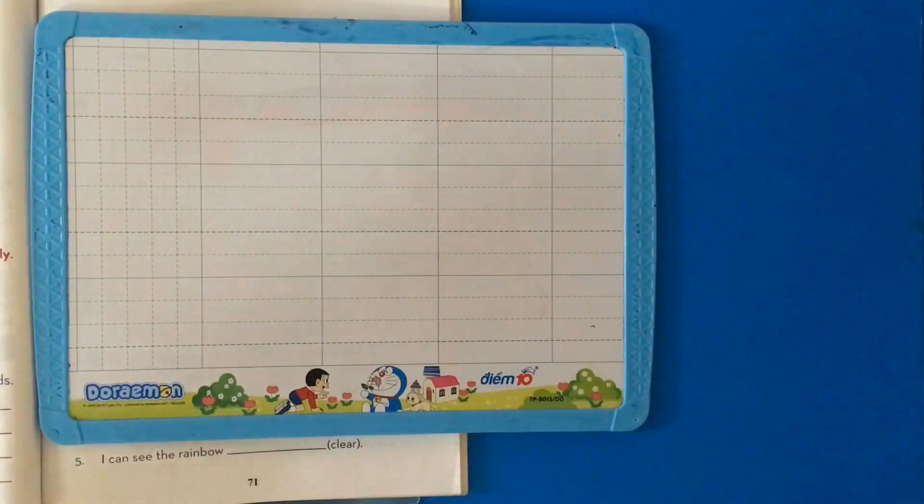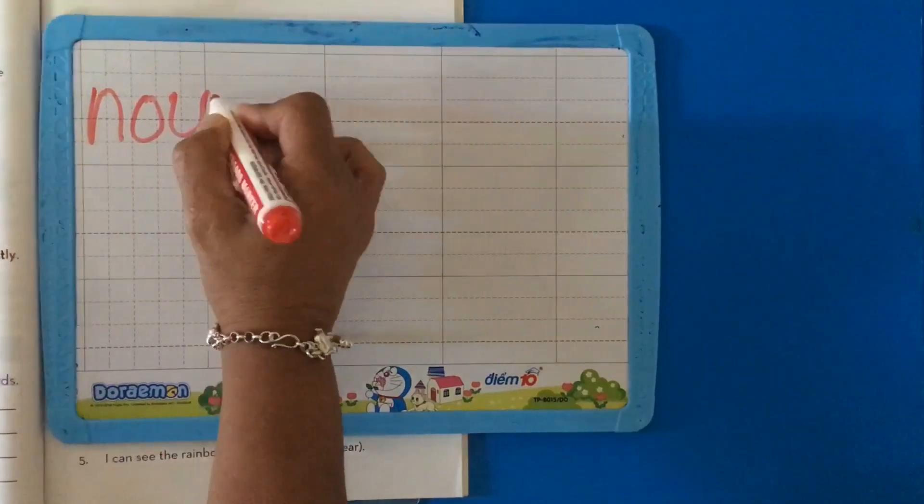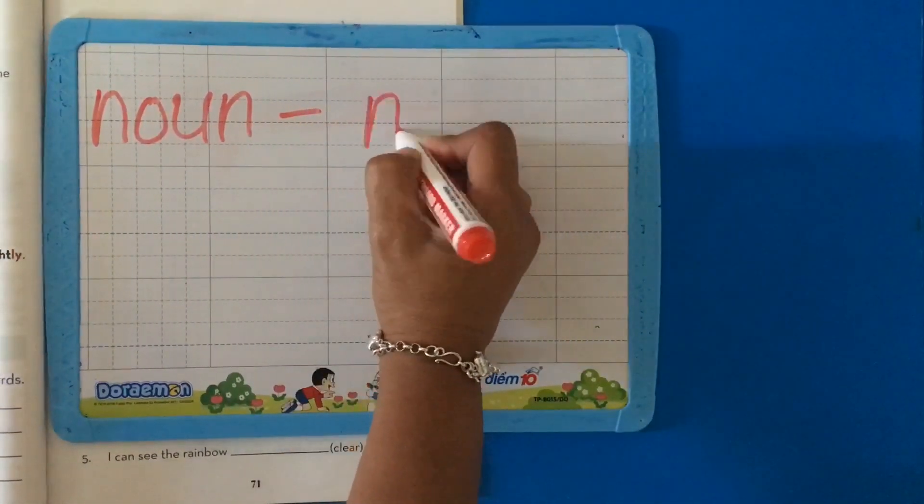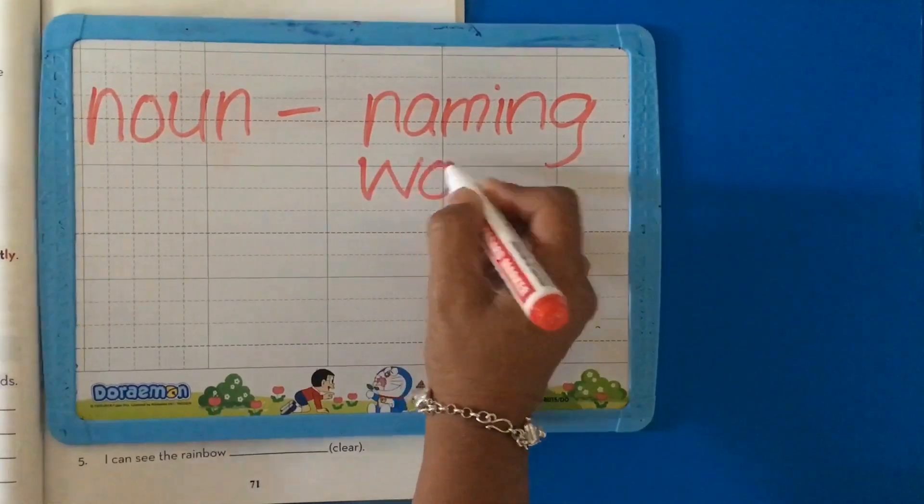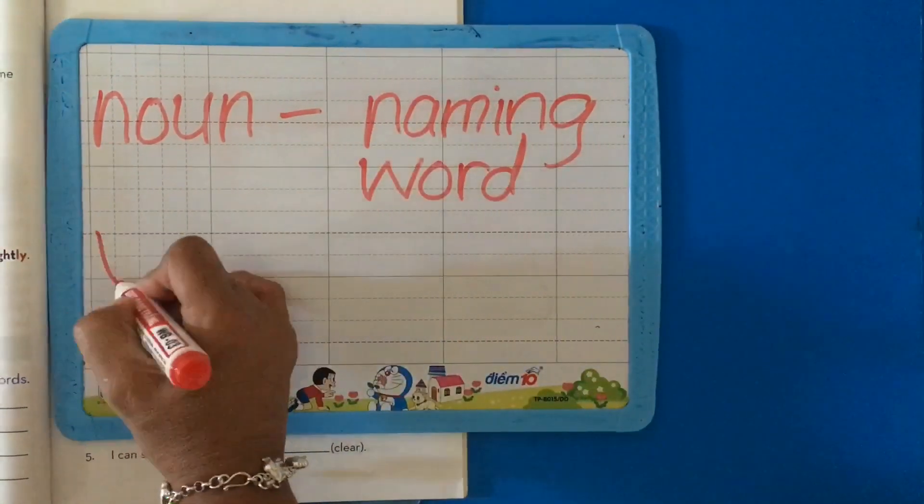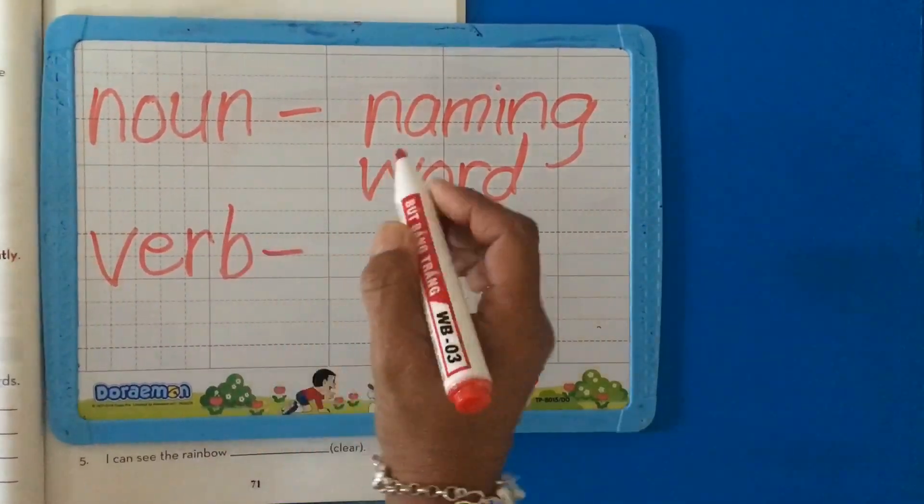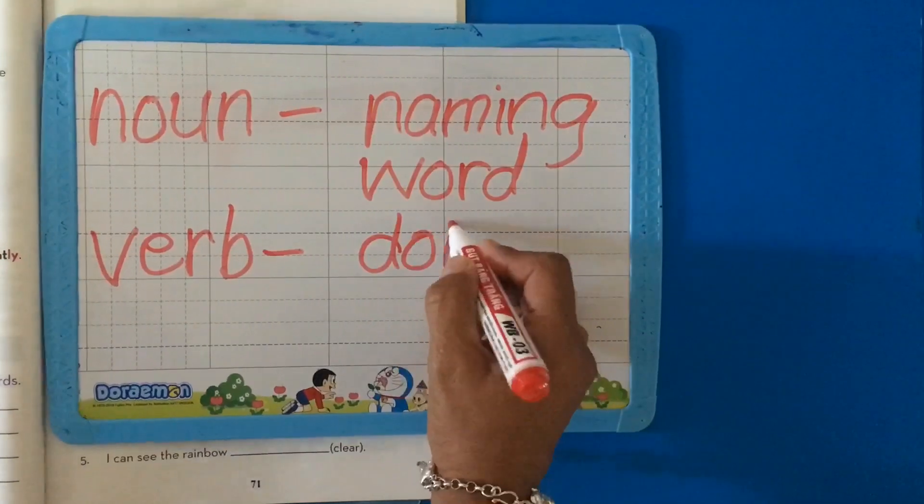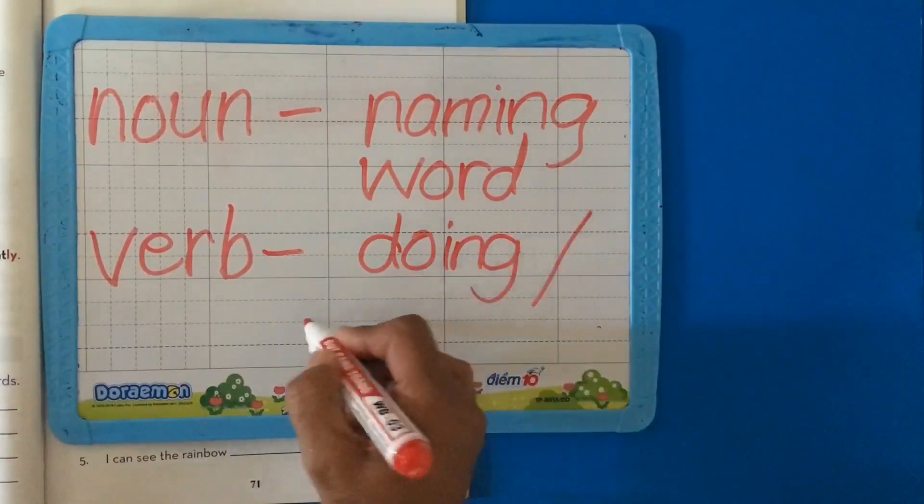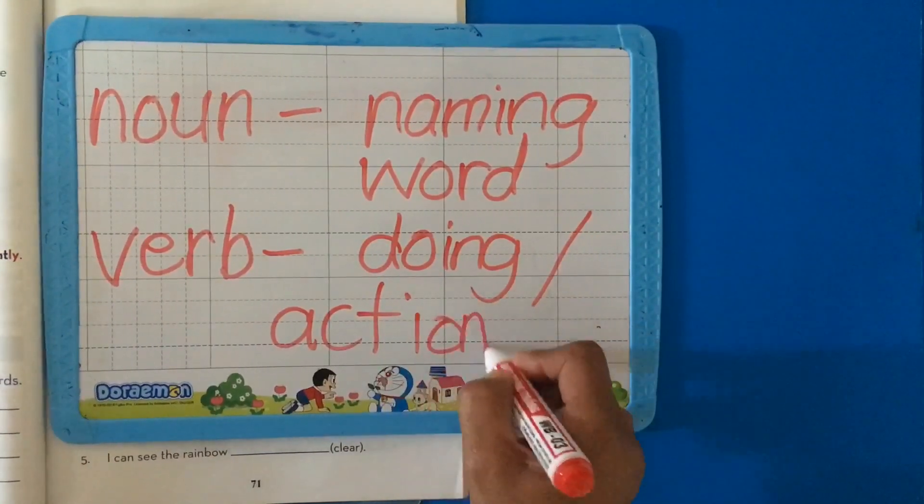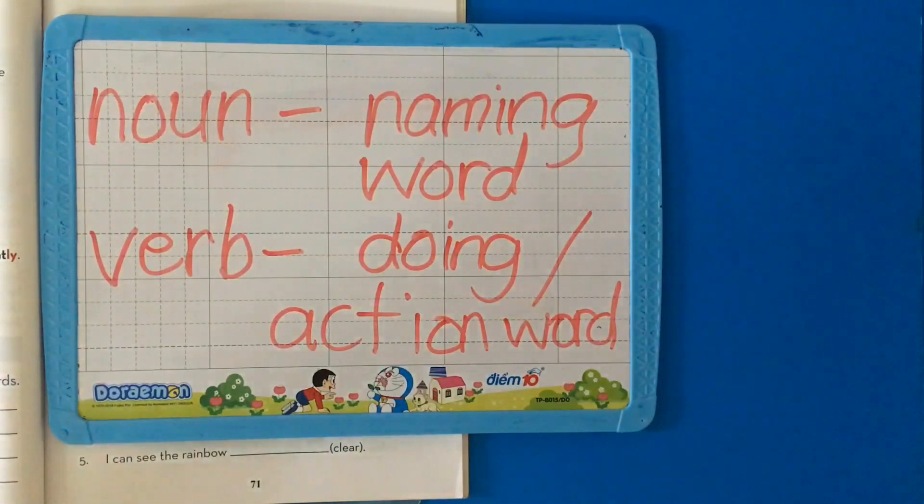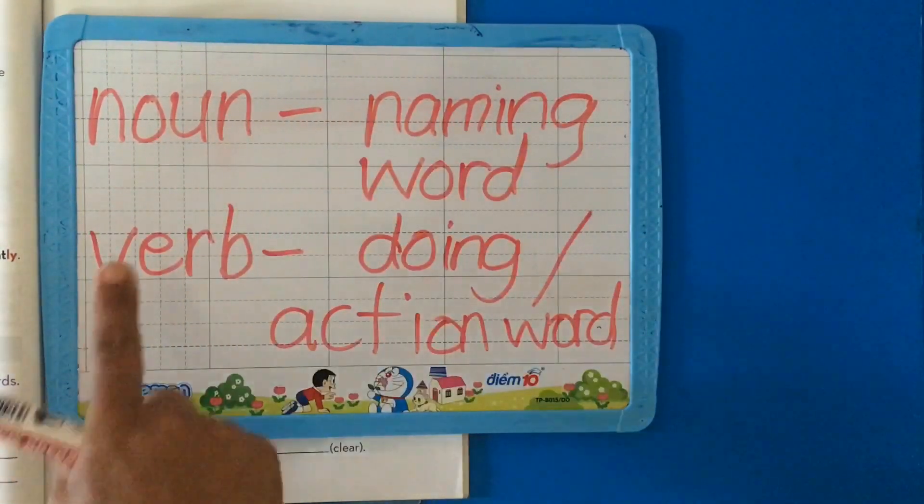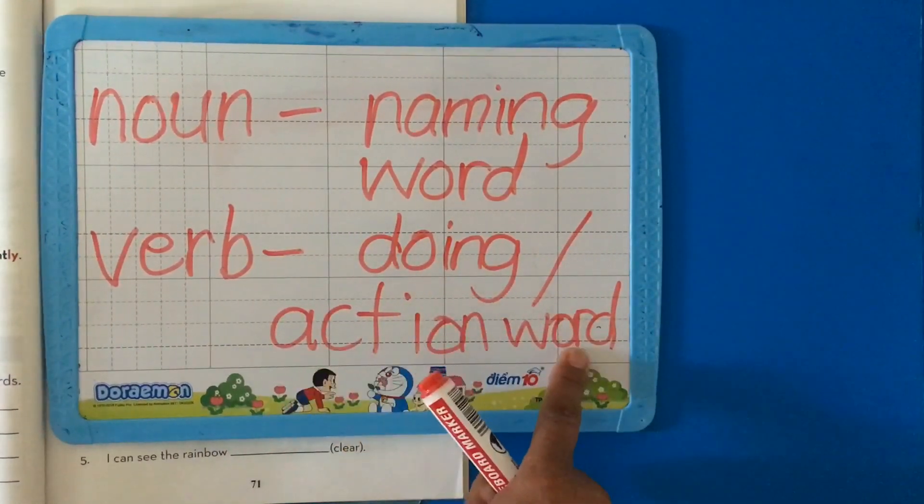What is a noun? A noun is a naming word. What is a verb? A verb is a doing word or an action word. Now we have learned this before but we are just recapping. A noun is a naming word and a verb is a doing or action word. Got it?